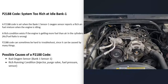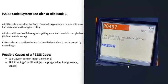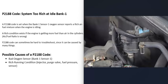The next cause is an actual rich running condition on the Bank 1 side of the engine, and this is where it can get difficult to troubleshoot. The first thing to check is whether you're getting any other codes, because that can help point you to the problem. For example, if you're getting a P0497 code — Evaporative Emissions System Low Purge Flow — that would point to a bad purge valve, which is part of the EVAP system that takes gas vapors from the gas tank and feeds them back to the engine to be burnt off.